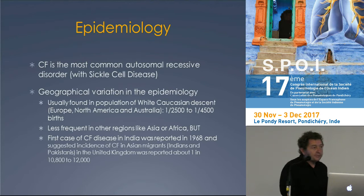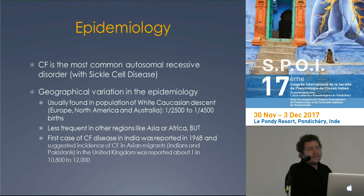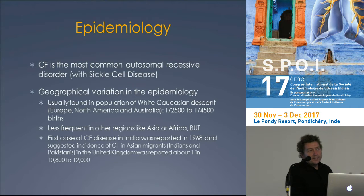D'un point de vue épidémiologique, la mucoviscidose est pour nous caucasiens en Europe, aux États-Unis et en Australie la première des maladies génétiques de l'enfant. Quand on se réfère aux 7 milliards d'habitants de la planète, la drépanocytose est la première des maladies génétiques, et en Inde, c'est tout à fait le cas. Il y a des variations géographiques extrêmement importantes. La prévalence est d'une naissance sur 2 500 à 4 500 chez nous. En France, on estime qu'il y a environ 7 000 patients suivis, 30 000 en Europe, et à peu près 30 000 aux États-Unis.